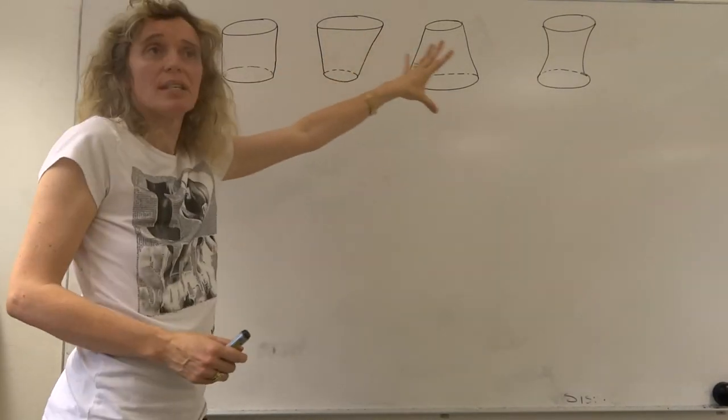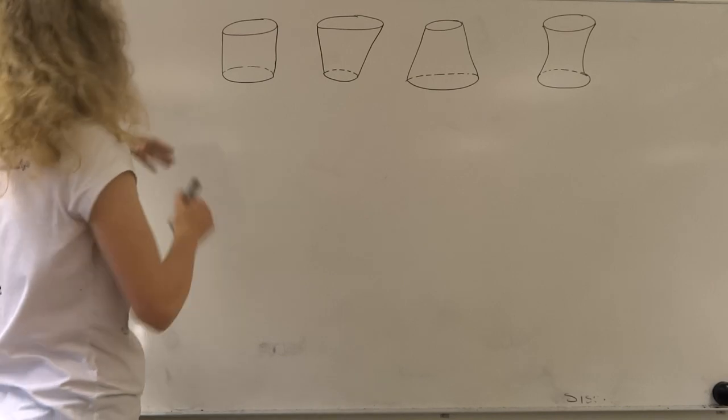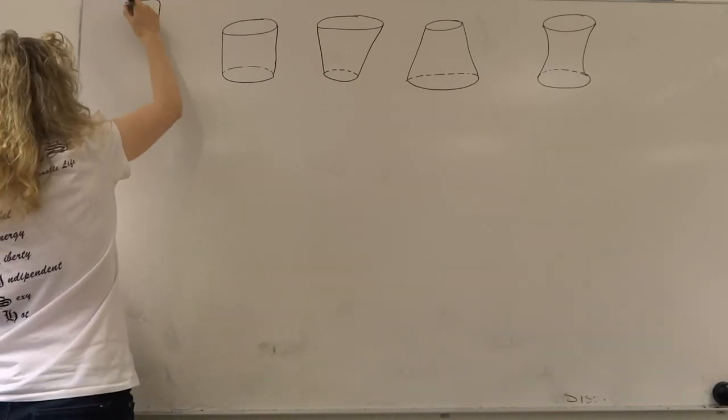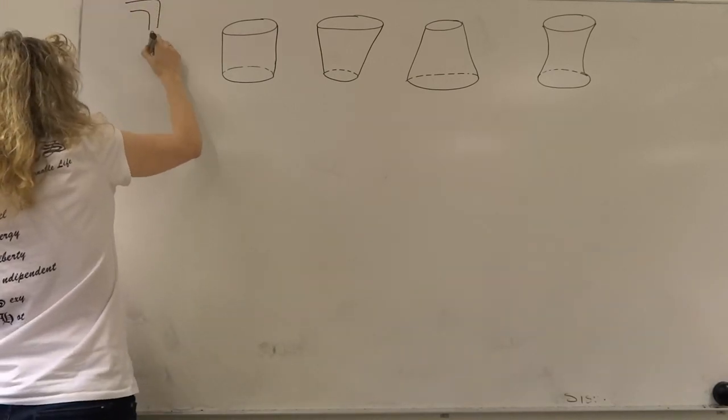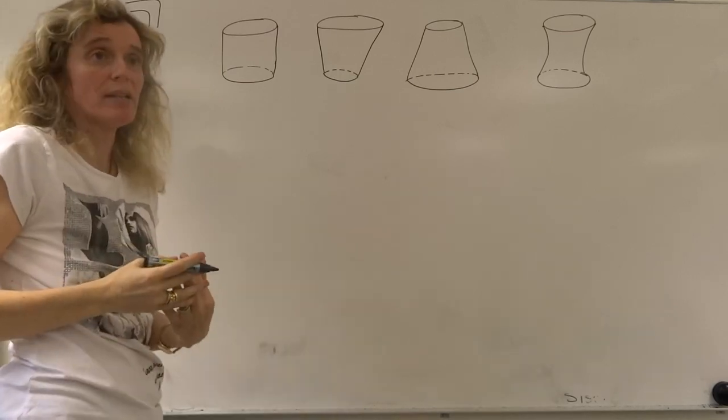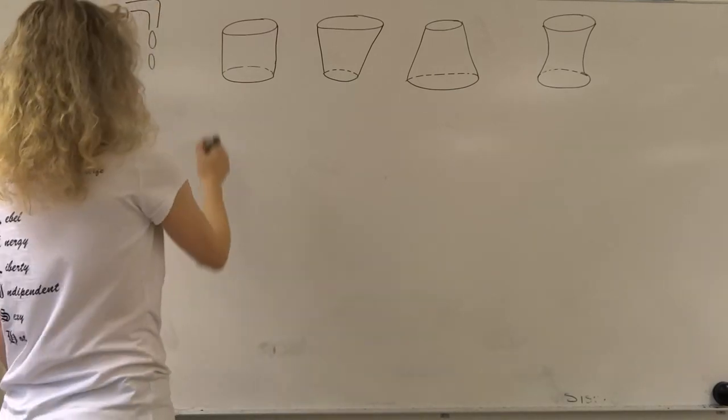So we're putting each of these vases that have exactly the same height under a tap, and water's gushing out of the tap at exactly the same speed. What's it going to look like?